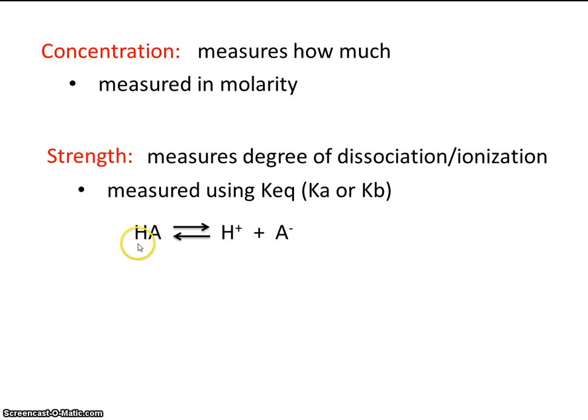Strength is going to be how much an acid breaks up. So there's an equilibrium here. We have some amount of this, and we have some amount of these. The extent to which it breaks up, that's the strength. How much of it we actually have, that would be concentration.